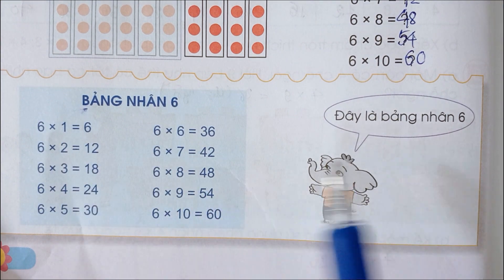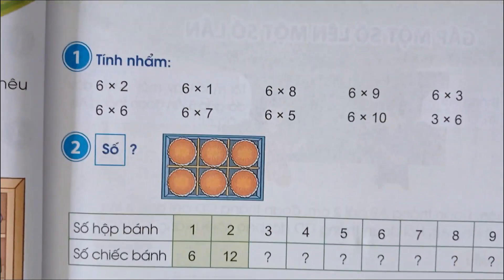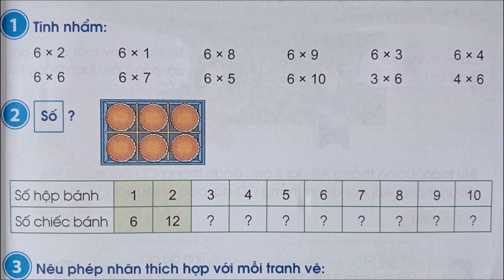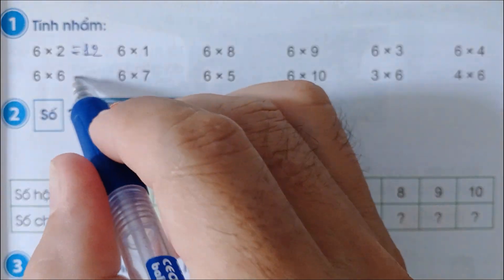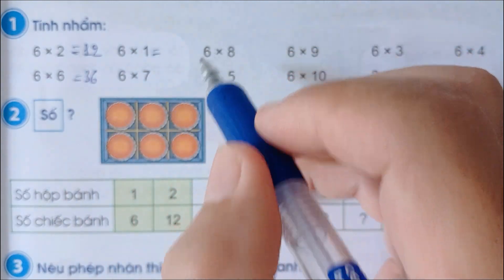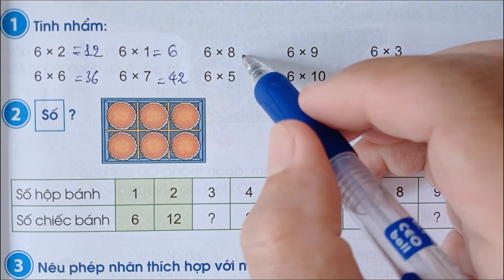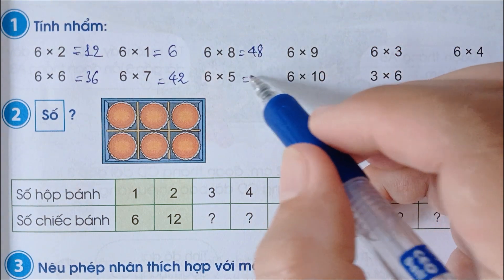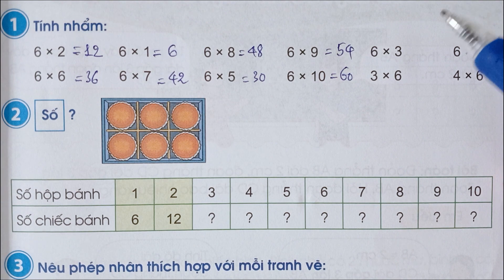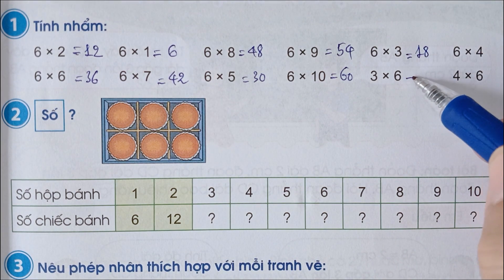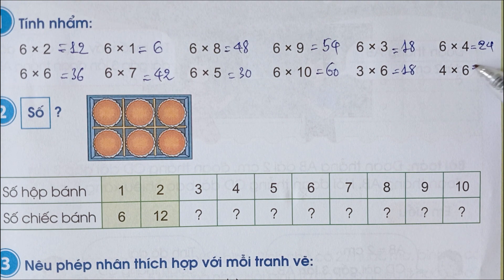Như vậy đây là bảng nhân 6 các em. Bây giờ ta qua tính nhẩm: 6 x 2 bằng 12, 6 x 6 là 36, 6 x 1 bằng 6, 6 x 7 là 42, 6 x 8 là 48, 6 x 5 là 30, 6 x 9 là 54, 6 x 10 là 60, 6 x 3 là 18, 3 x 6 là 18, 6 x 4 là 24, 4 x 6 là 24.